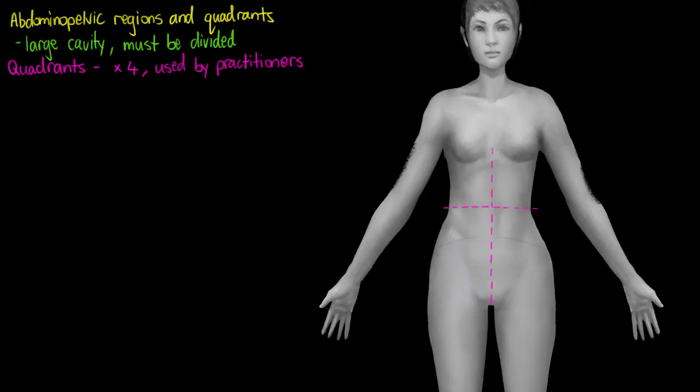We partition it vertically at the mid-sagittal line and horizontally at the umbilicus or where your belly button is. And they form right angles between those two lines. So you can see these right angles forming here where the lines intersect.